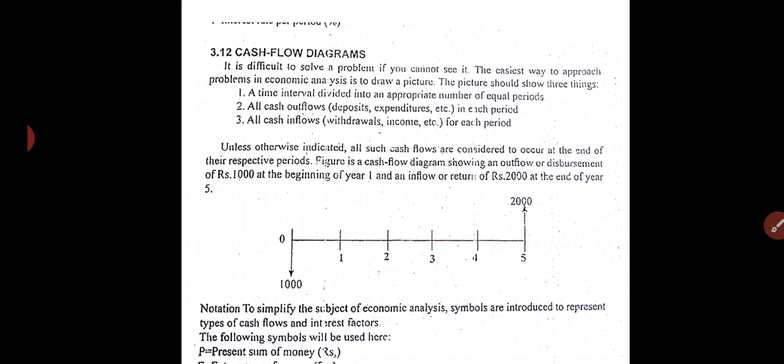It is difficult to solve a problem if you are not able to see the problem. The easiest way to approach the problem in economic analysis is to draw a picture. The picture should show three things: a time interval divided into appropriate number of equal periods, all cash outflows, and all cash inflows. Unless otherwise indicated, all such cash flows are considered to occur at the end of the respective period.